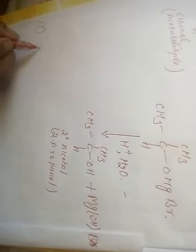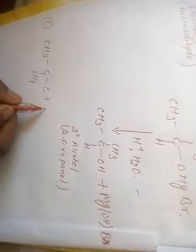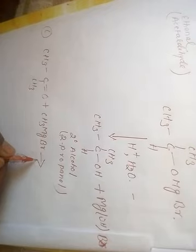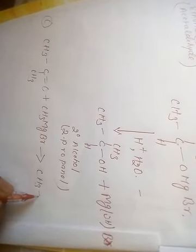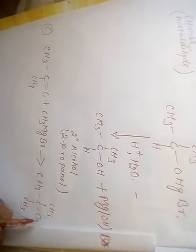Ketones give tertiary alcohol. CH3-C=O-CH3 in ketone form reacts with RMgX (CH3MgBr). It gives CH3-C-CH3-CH3 as the addition product with OMgBr.